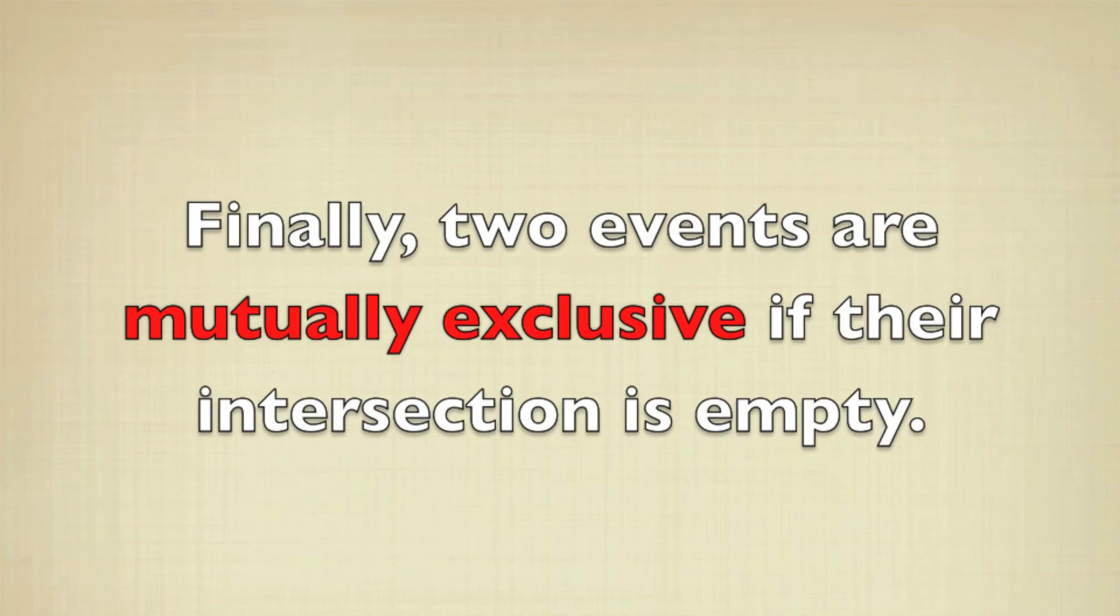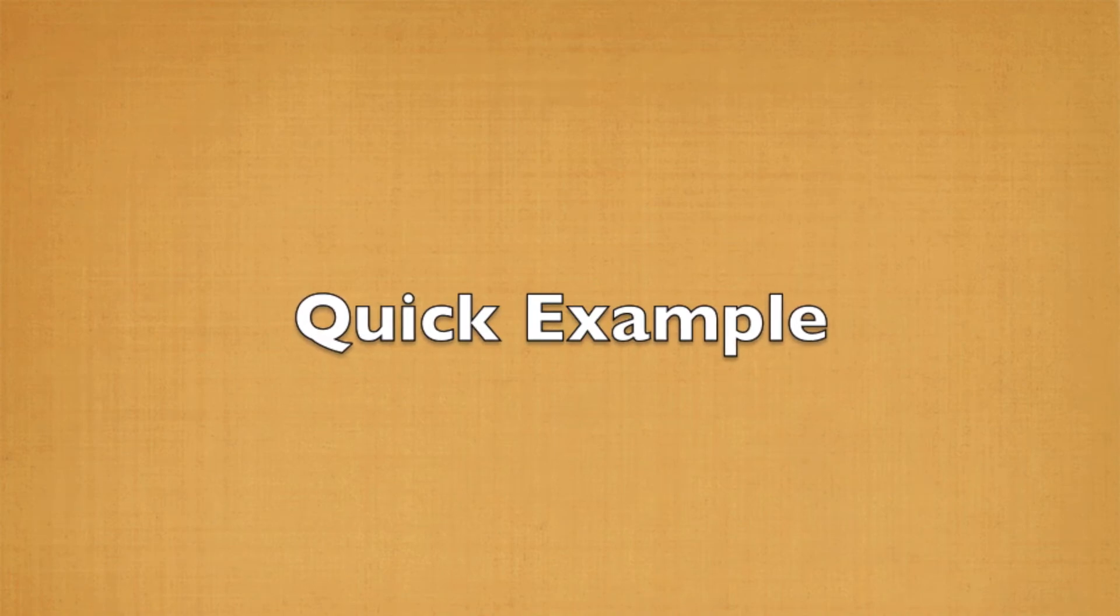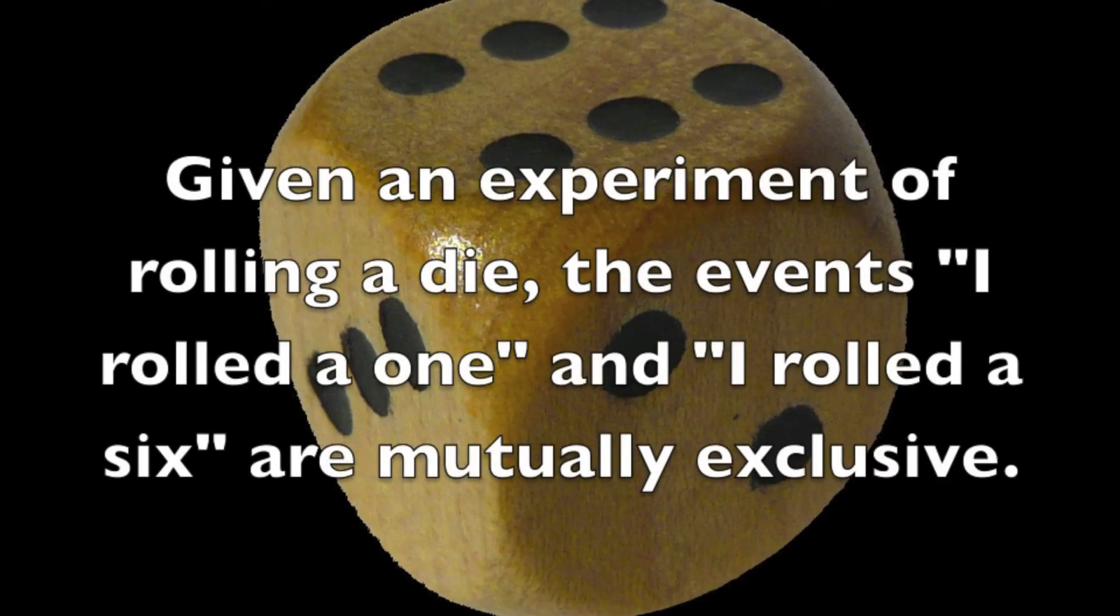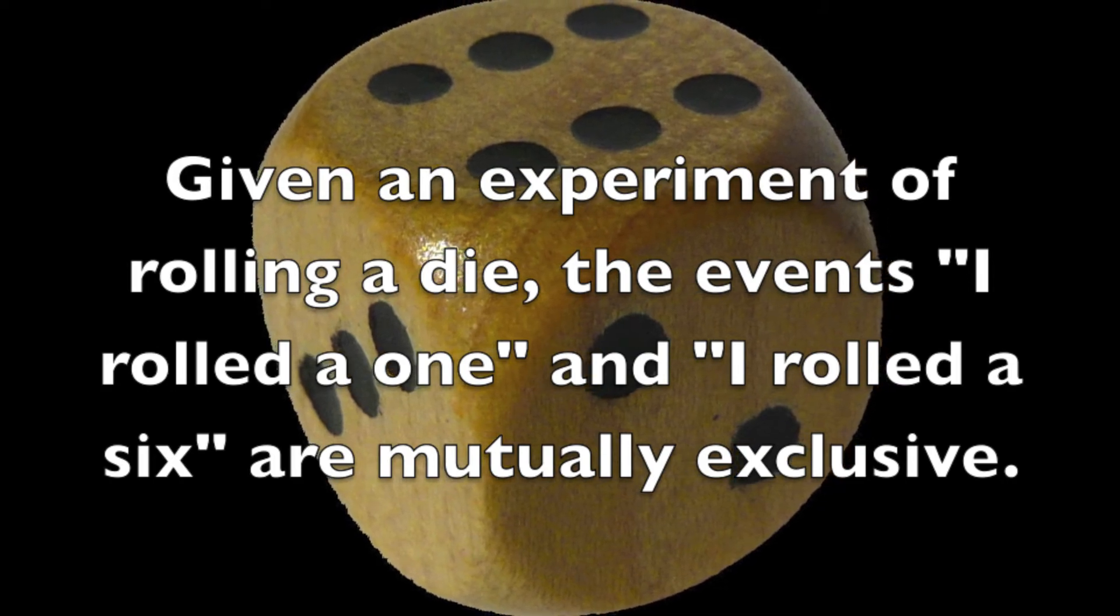Two events are mutually exclusive if their intersection is empty. As a quick example, if the experiment is rolling a die and looking at the number, then the events 'I rolled a 1' and 'I rolled a 6' are going to be mutually exclusive.